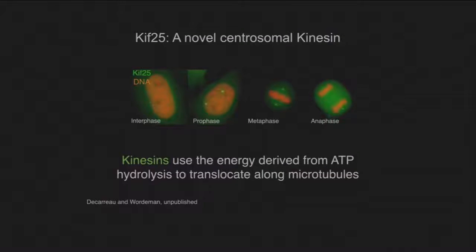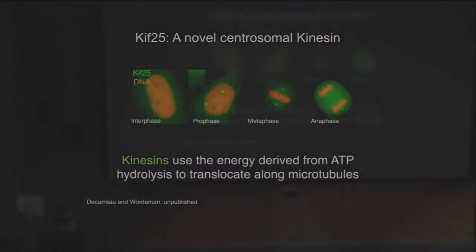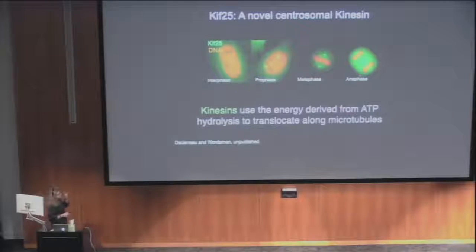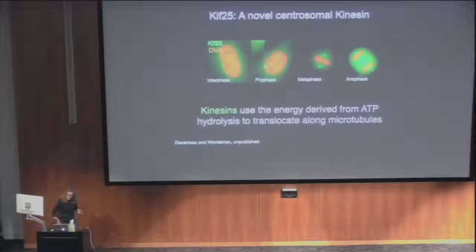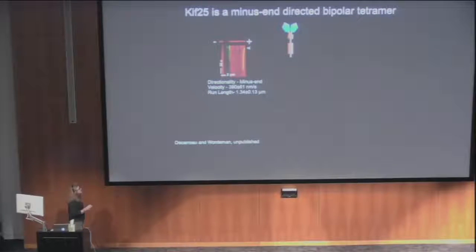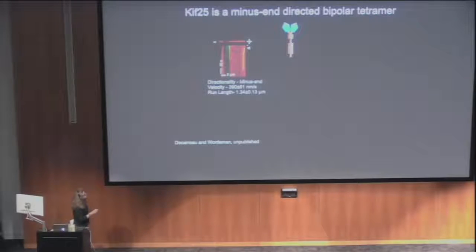We began to work on KIF25 and became interested in centrosomes because when we did our first localization of KIF25, it appeared to associate with centrosomes throughout the cell cycle — both at mitosis and during interphase. Kinesins use the energy of ATP hydrolysis to translocate along microtubules. So we took KIF25 in vitro, put it on microtubules under the TIRF microscope, and determined what direction it translocates in ATP. What we found is that a single molecule lands on a microtubule and immediately begins to translocate towards the minus end. So this is a minus-end directed kinesin.